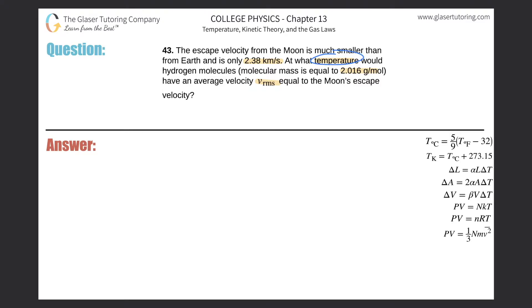Alright, so basically what we need is we're trying to find the temperature, and we're basically given the root mean square velocity. We might not have it in the right units, but that's essentially the value. So what we need to know is an equation that relates temperature to root mean square velocity.